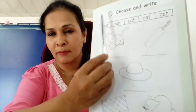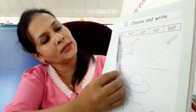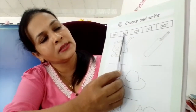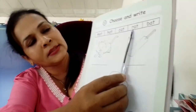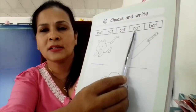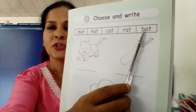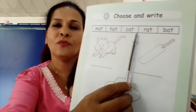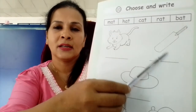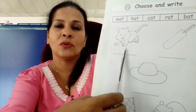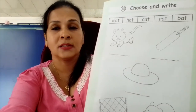If you can't remember, you can find it. See: mat, hat, cat, rat, bat. Choose your word from these boxes and write on the dotted lines and practice to read.